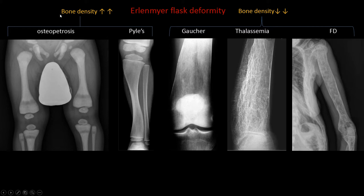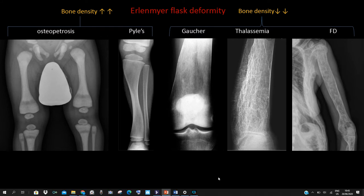If there is increased bone density or bone sclerosis, the differential diagnosis would be either osteopetrosis or Pyle disease. If there is decreased bone density or osteopenia, this could be Gaucher disease, thalassemia, or fibrous dysplasia.